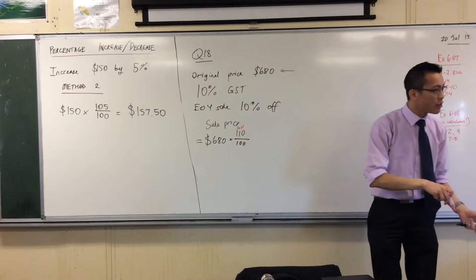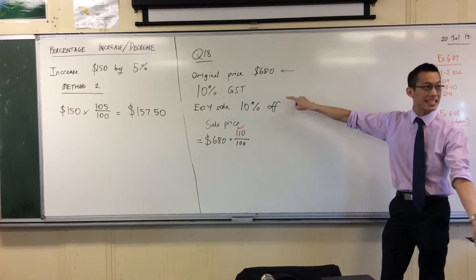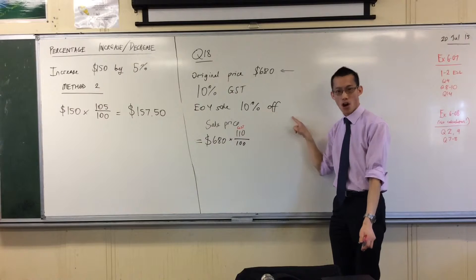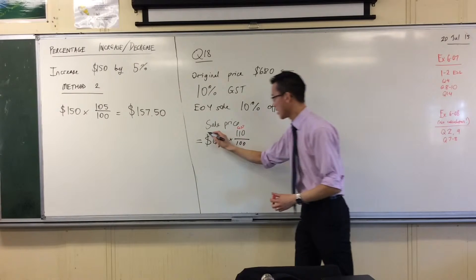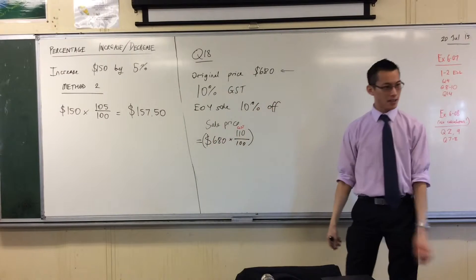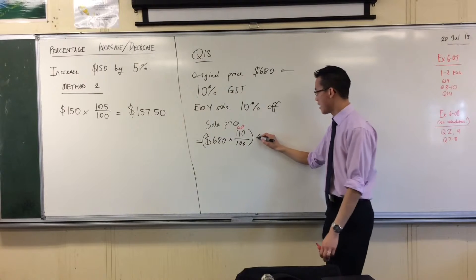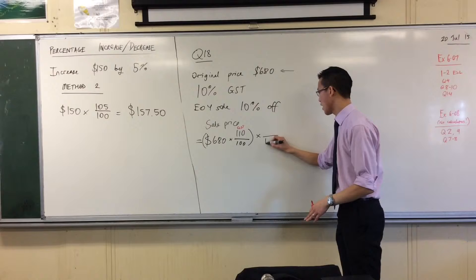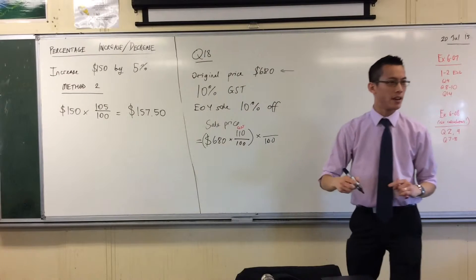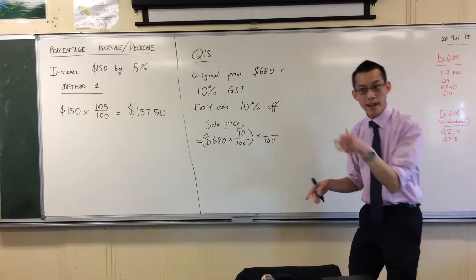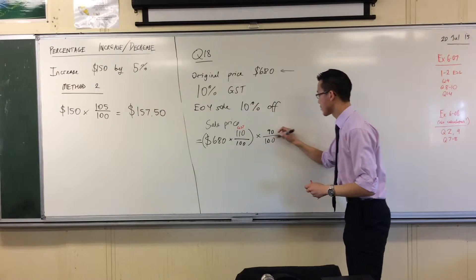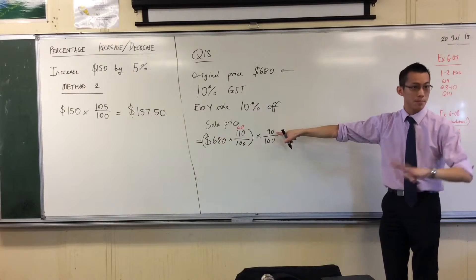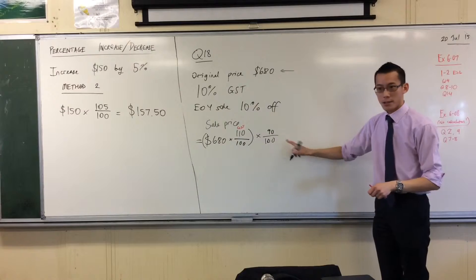But then that's not the only thing that happens. It then subsequently gets decreased, 10% off. So now, this is the tax price, and then I'm going to discount it. So it's a decrease, so it's still multiplying by something over 100, but it'll be less than 100, won't it? Because it's decreased. It'll be 90. That's 10% off. Do you see that? 10% is gone.